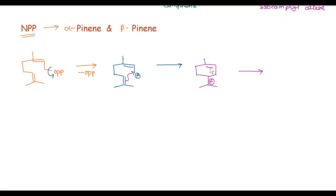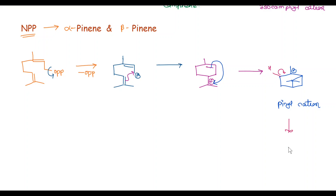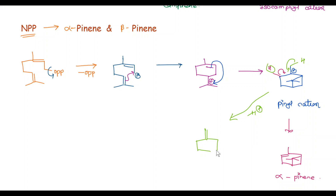In the next step, this Pi bond attacks via this carbon atom on this carbocation, and we get here a positive charge. This moiety is called as Pinene-cation. From this moiety, if we lose this proton, we get this moiety and it is called as Alpha-Pinene. And instead, if you lose along this minus H plus at a different position, then we get this moiety which is called as Beta-Pinene.